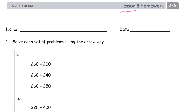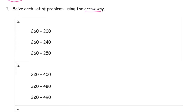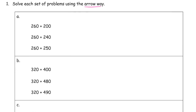Welcome to the homework for lesson 3. This is module 5 of grade 2 — please write your name here first. We're solving problems using the arrow way. Now you can do these mentally, but the idea is to use the arrow way and practice using it. It's just writing down how you do your mental math. Sometimes it doesn't look much different.